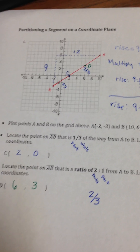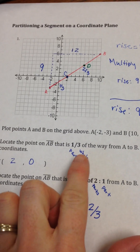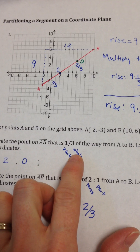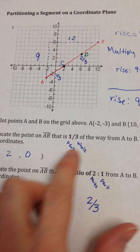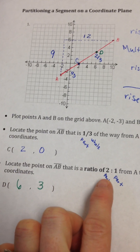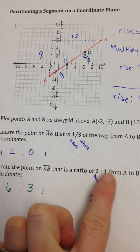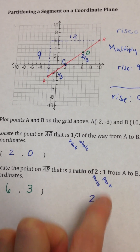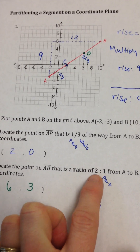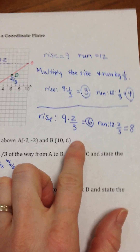So that's how to partition a segment in two ways. One way is when they give you the fraction, which tells you the part to whole — you just multiply the rise and run by that fraction. The other way is when they give you a ratio — you add up the two parts to get the denominator, put the first number on top to form the fraction, then multiply your rise and run by that fraction the same way.